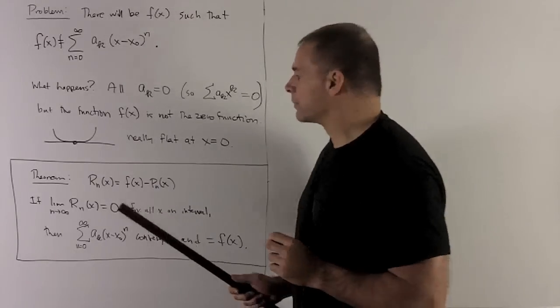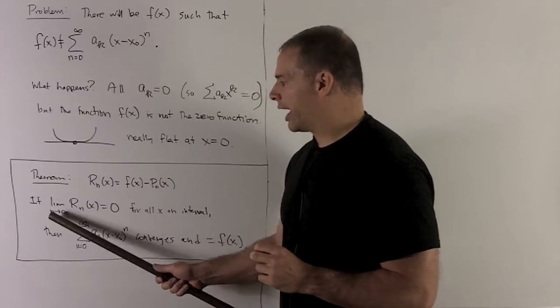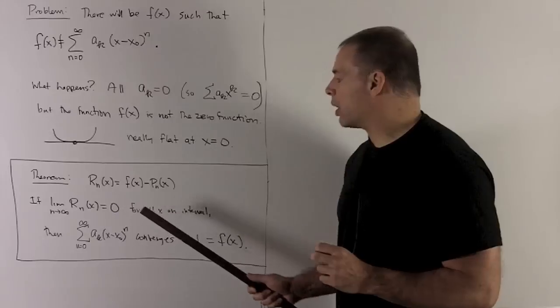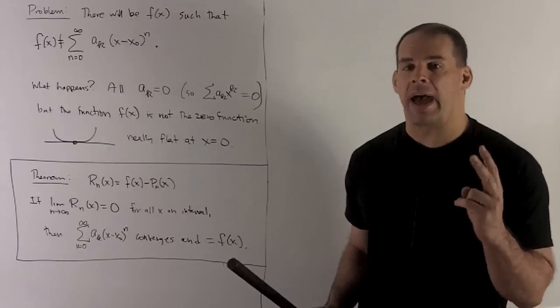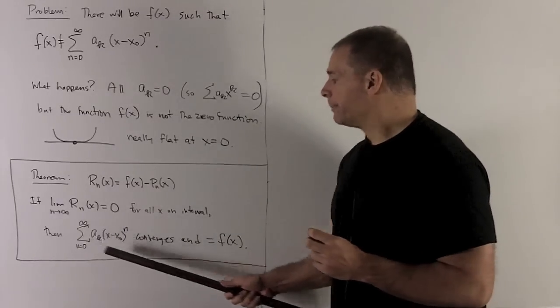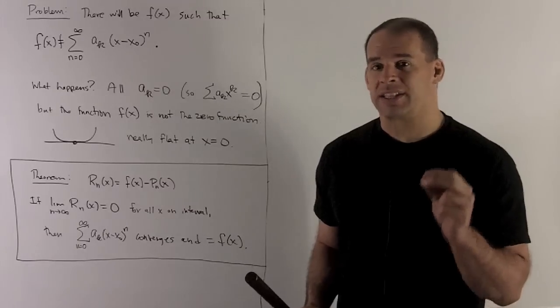Theorem says you take your remainder functions, fix your x, you let your n go off to infinity. If you get that to be equal to zero for all x on the interval where you're defined, then two things are going to happen. The first is going to be the Taylor series that you're using is going to converge, and then the second